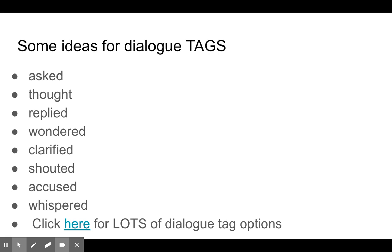Here are some ideas for dialogue tags: he asked, he thought, he replied, she wondered, she clarified, I shouted, I accused, we whispered. If you click on the link, there's actually a list of about 250 different tags you could use. A note of caution: use rare tags sparingly so you don't sound overdramatic with every single piece of dialogue. It is appropriate sometimes to use the word 'said' or 'stated' as a dialogue tag so we're not being pummeled with all these dramatic words.